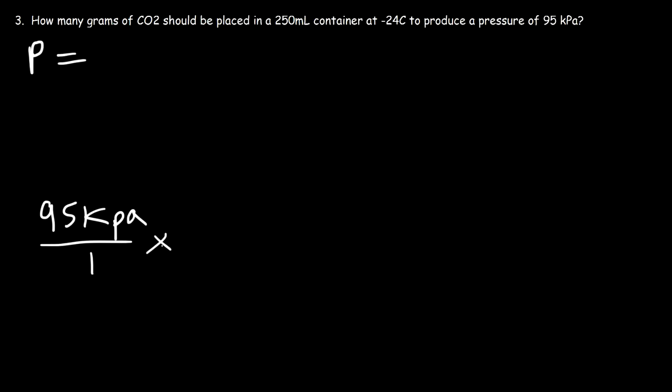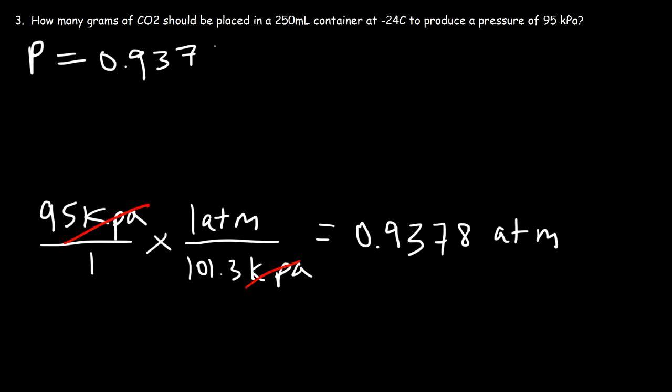Now the conversion factor between kPa and atm is one atm is equal to 101.3 kPa. So to convert kPa into atm, divide by 101.3, and so that's going to amount to 0.9378 atm. Now we have the volume. The volume is in milliliters. To convert that to liters, divide by thousand, so 250 divided by thousand is 0.25.